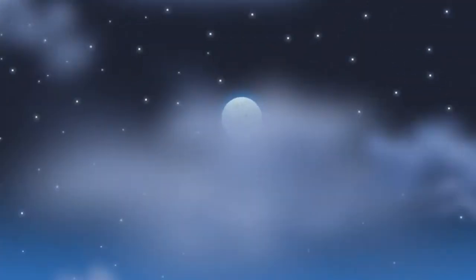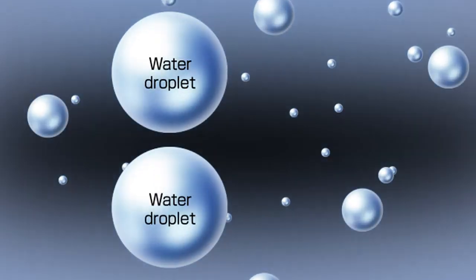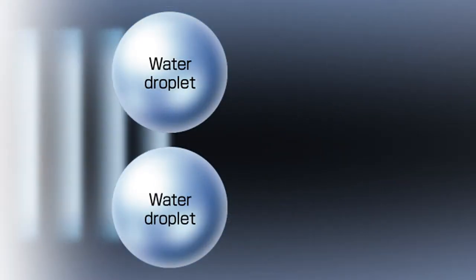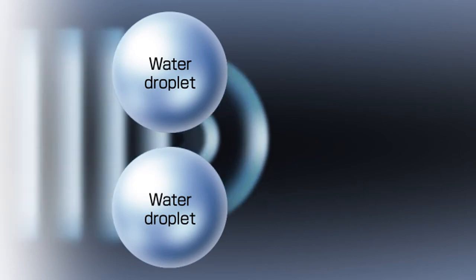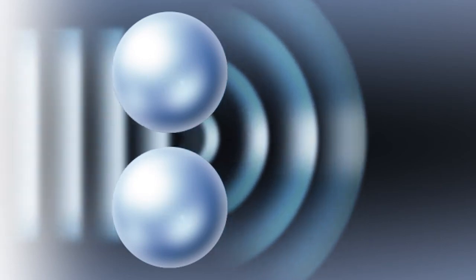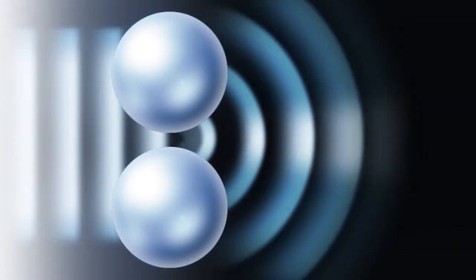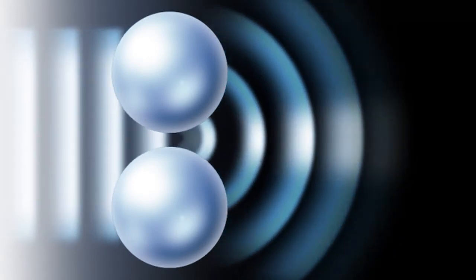Clouds are made from small droplets of water. Diffraction also occurs when light hits water droplets. Light is diffracted at the end of these droplets, spreading out in semicircle, just like the waves.